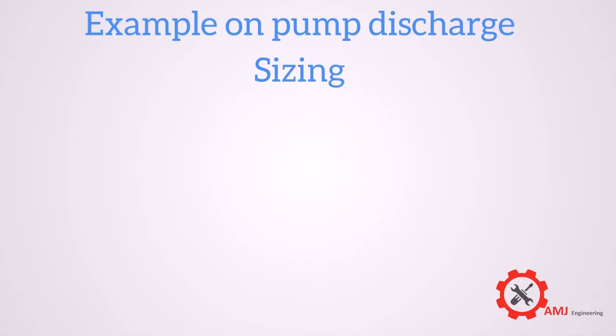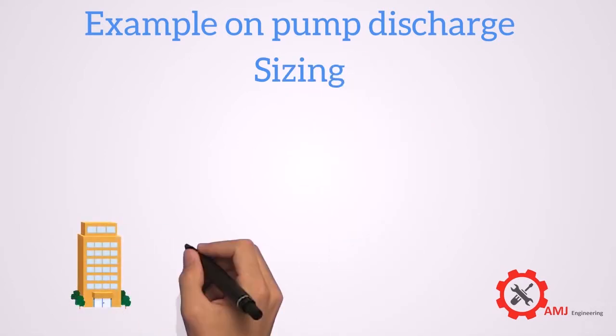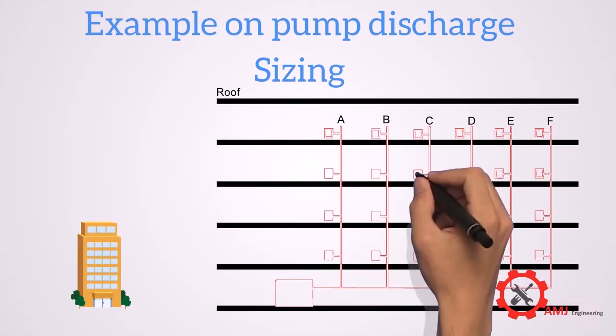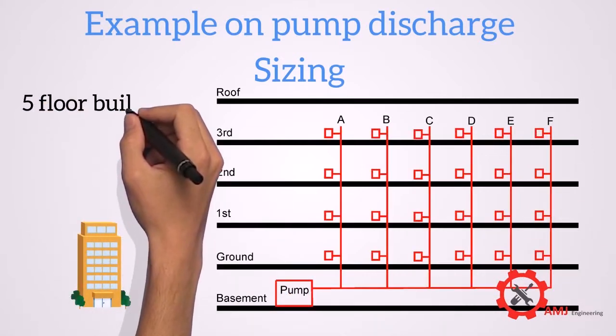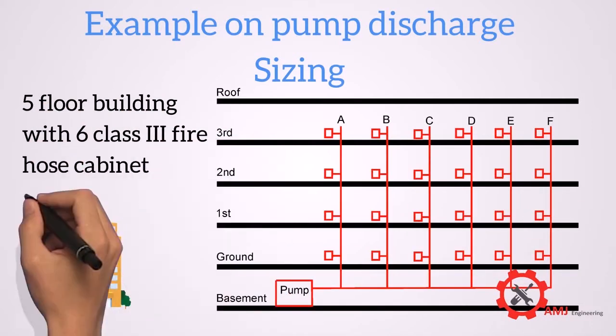Example: A building of 5 floors is provided with 6 class 3 fire hose cabinet risers. Each riser is connected to 1 fire hose cabinet in each floor.